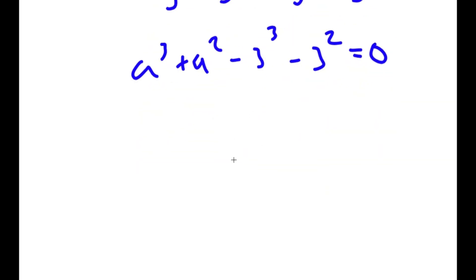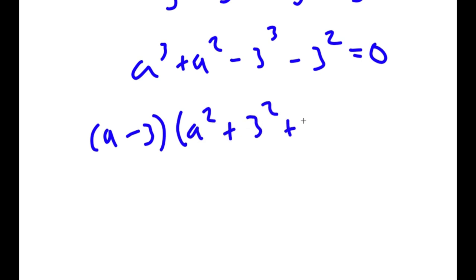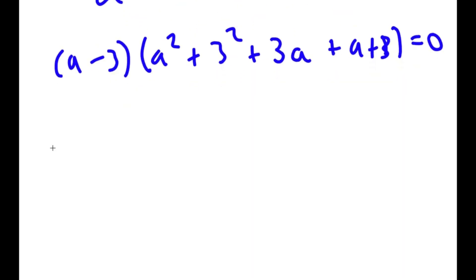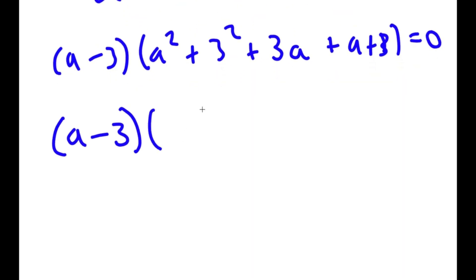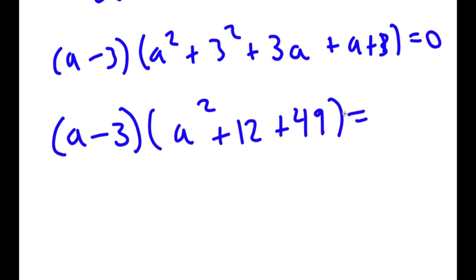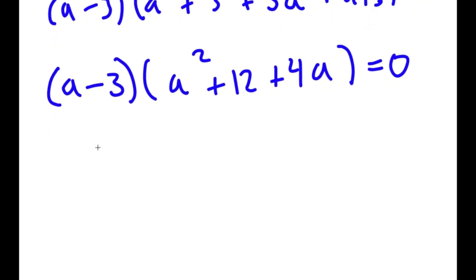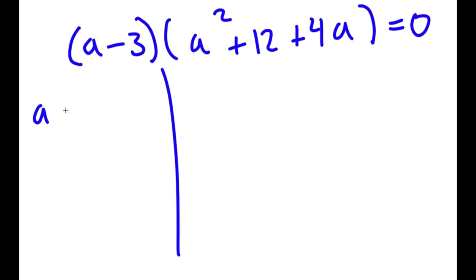I can rewrite this in the form a minus 3 times a squared plus 3 squared plus 3a plus a plus 3, which simplifies to a minus 3 times a squared plus 4a plus 12 is equal to 0. So this gives me two equations: a minus 3 equals 0, and a squared plus 4a plus 12 equals 0.